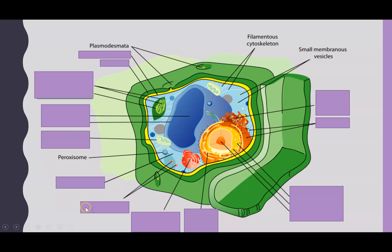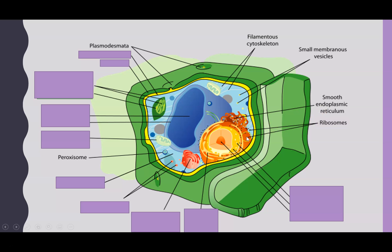Now the same again but for our plant cell. Structures you don't need to know have been left unlabeled. Pause the video and see how many of these organelles you can identify. We have the smooth endoplasmic reticulum — shown slightly differently here than in the animal cell, but you can still see the folded cisternae. Then we have ribosomes, shown as tiny little dots.